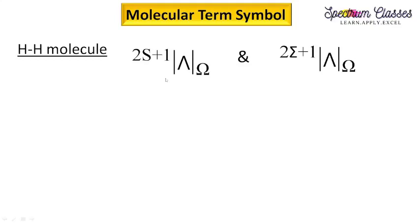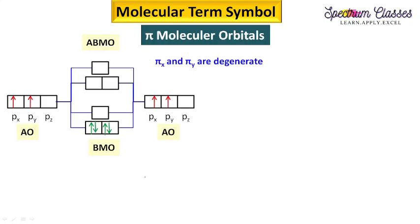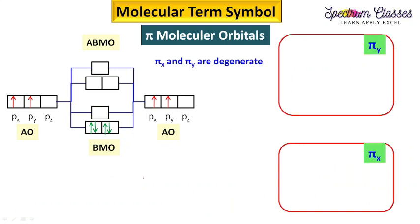Hello everyone, welcome back to Spectrum Classes. This is my next video on the topic of molecular term symbols. In this video I am going to discuss the reflection symmetry of π orbitals. You always assign λ = +1 for one orbital and λ = -1 for the other orbital, so you have two different orientations of the π orbitals.